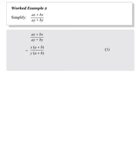Now we can see that A plus B is a common factor of the top and the bottom. So, we divide top and bottom by A plus B in step 2, leaving the answer X over Y.